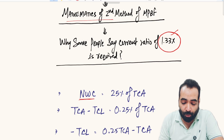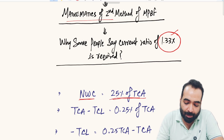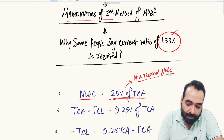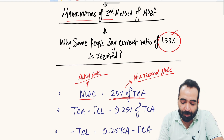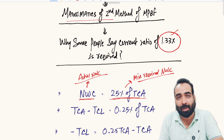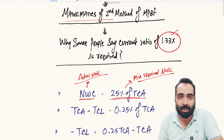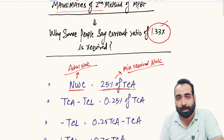Mathematically, your actual NWC should be equal to 25% of total current assets — this represents the minimum required NWC. If your actual NWC equals the minimum required NWC, your eligibility under MPBF Method 2 shall be met. So NWC should be equal to 25% of total current assets — this is what MPBF Method 2 tells us.